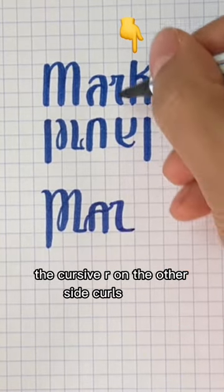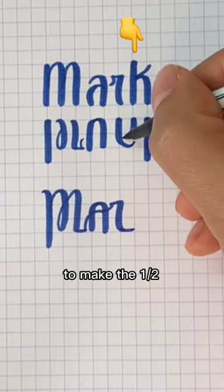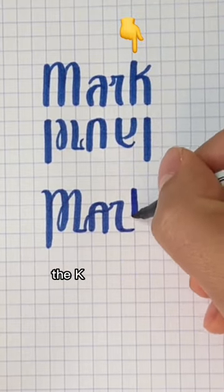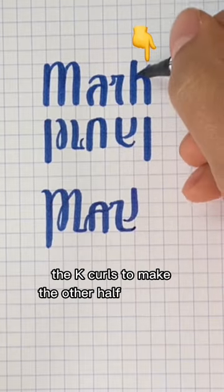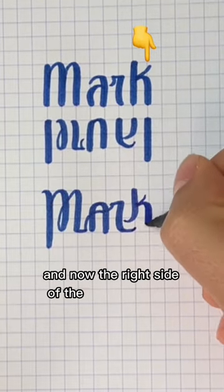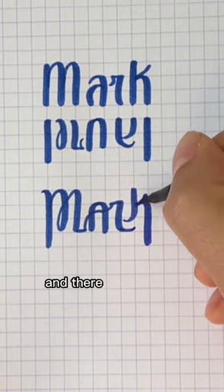The cursive R on the other side curls down to make one half of the A. The K curls to make the other half of the A. And now the right side of the K makes the L. And there you have it, a Mark to Laurel ambigram.